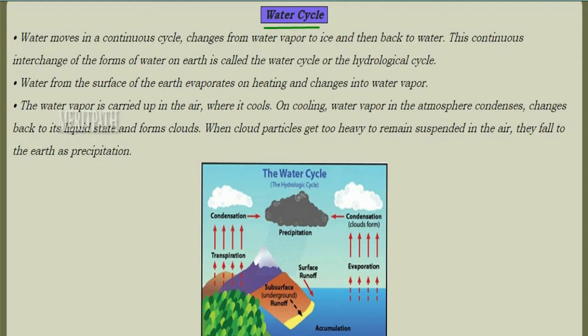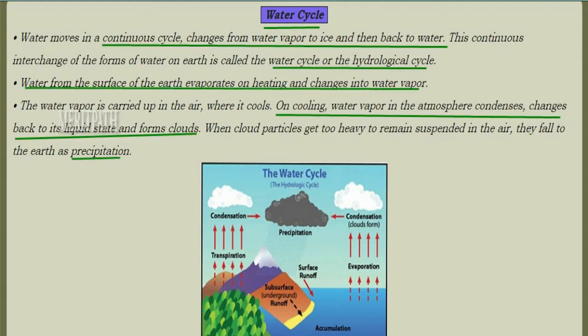Let's study about the water cycle. Water moves in a continuous cycle, changing from water vapor to ice and back to water again. This continuous changing of forms of water is known as the water cycle, or hydrological cycle.